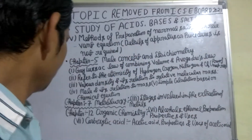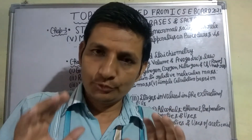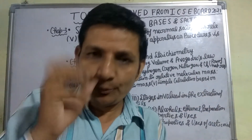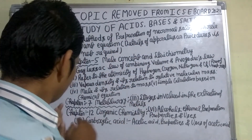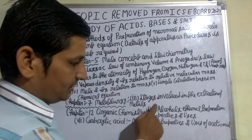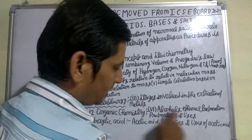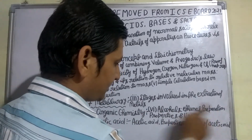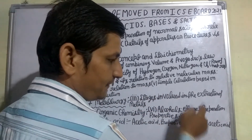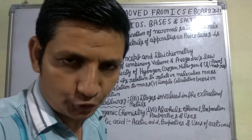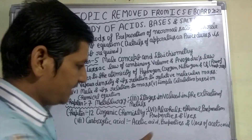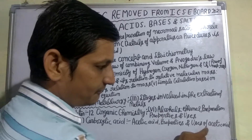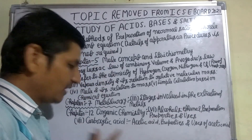After this, Chapter 12 also has some topics removed. Chapter 12 is Organic Chemistry — Alcohols. Ethanol: preparation, properties and usage of ethanol are removed from your syllabus. After this, in Carboxylic Acid, the properties and usage of simple monocarboxylic acid are also removed from your syllabus.